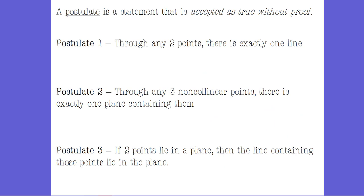A postulate is a fancy geometry word for a statement — it's a rule, something known to be true. The first postulate is: through any two points, there is exactly one line. I could pick any two points anywhere in the universe, and there is exactly one line through them — no different way to draw a line that hits both points.